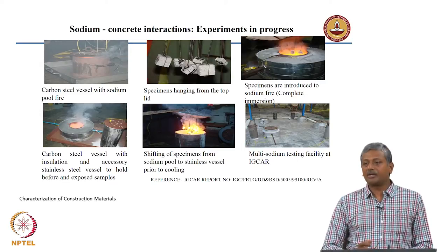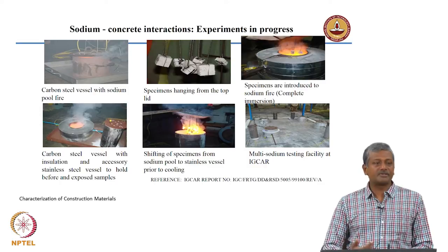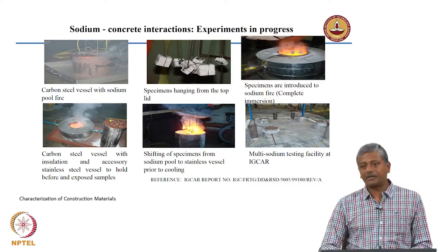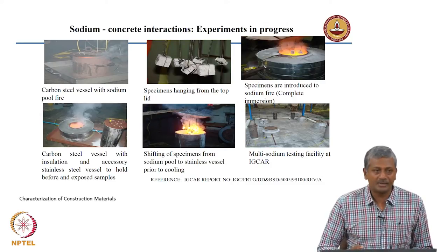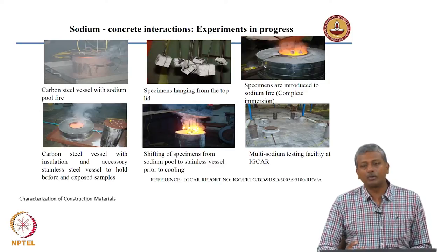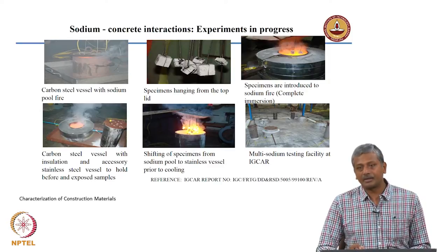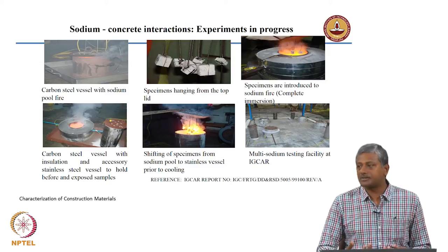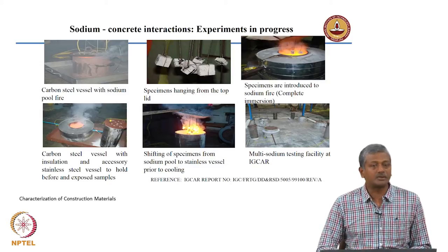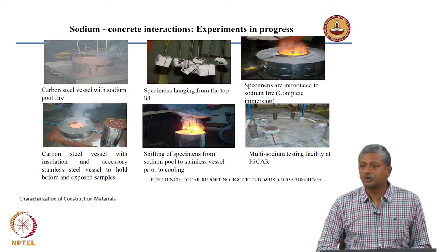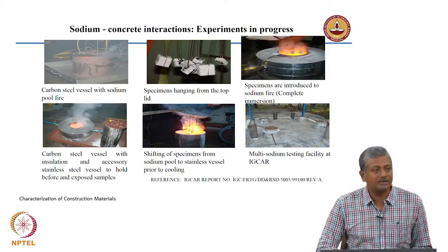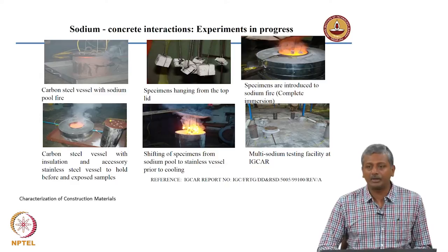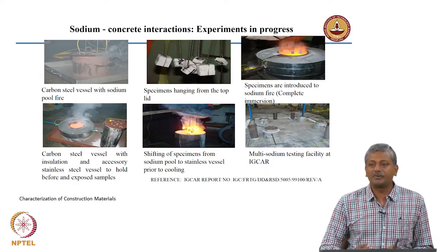Why do we provide limestone aggregate concrete on the surface? This is because limestone is much more resistant to heat as compared to granite. Granite loses its elastic modulus rapidly after about 550 degrees Celsius — it loses its strength and properties rapidly. Limestone, on the other hand, decarbonates only at very high temperatures, nearly 700 to 900 degrees Celsius, so it is able to withstand higher temperatures.